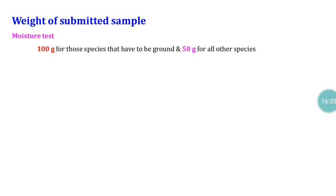In addition to regular seed quality assessment, one more sample must be taken for moisture estimation. For material that needs grinding for moisture estimation, we take 100 grams; for cases where no grinding is needed, we take 50 grams. Whatever the sample — 50 grams or 100 grams — it should be packed in a moisture vapor-proof container, whereas the submitted sample is packed in a cloth pack. Packing in moisture vapor-proof container for moisture samples is very important.